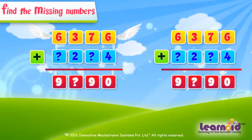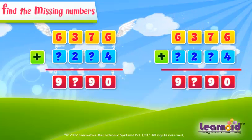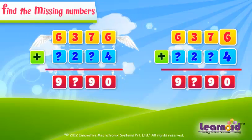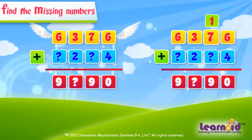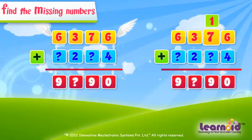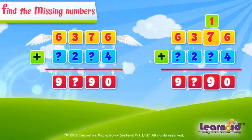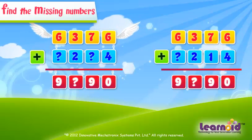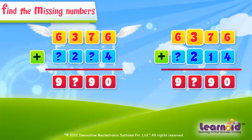To find the missing digits, first add the digits in the 1's column. In the 10's column, 7 plus carry 1 is equal to 8. To get 9, we have to add 1. Now, in the 100's column, 3 plus 2 is equal to 5.